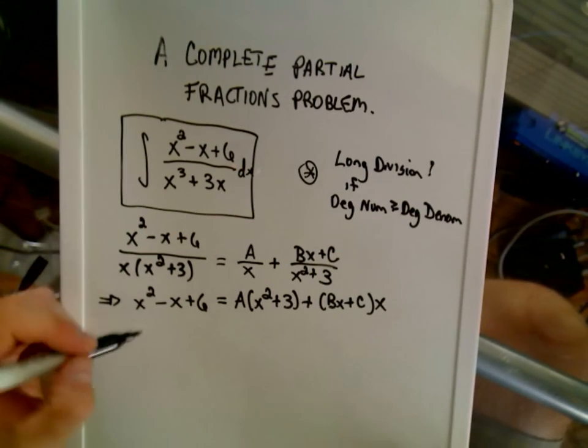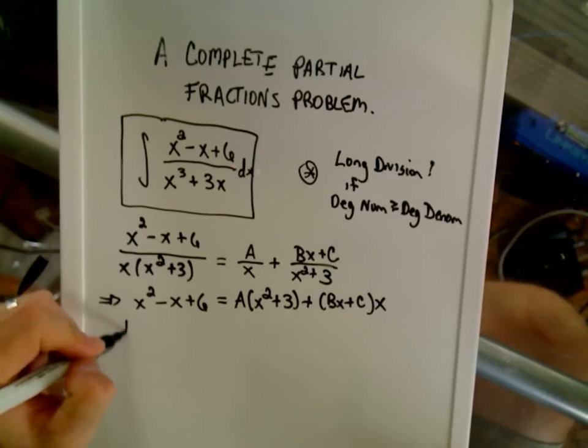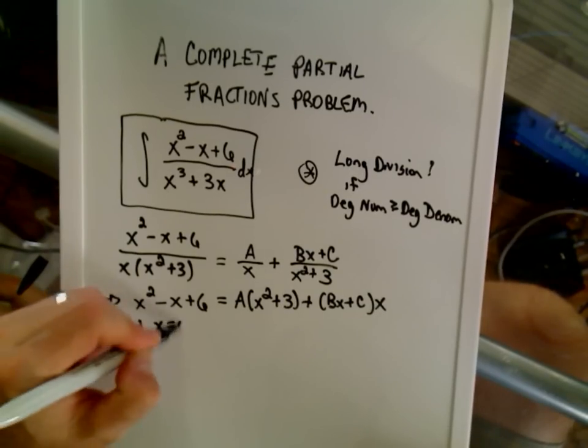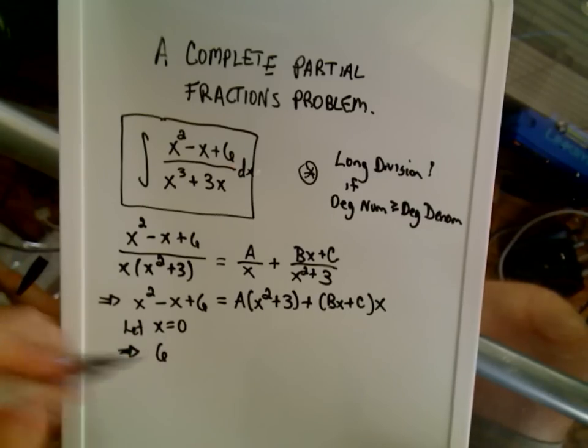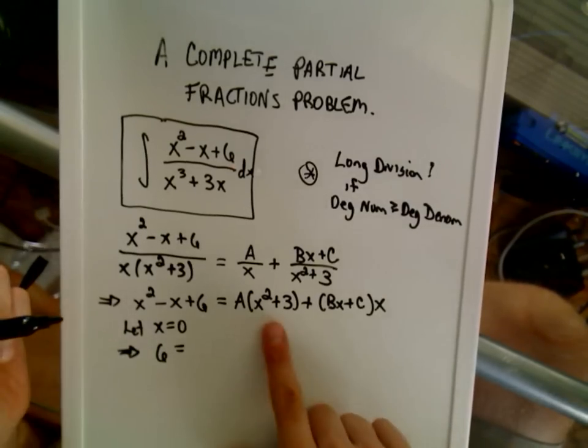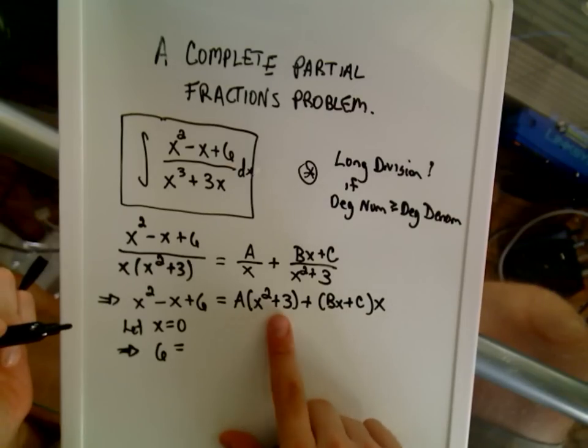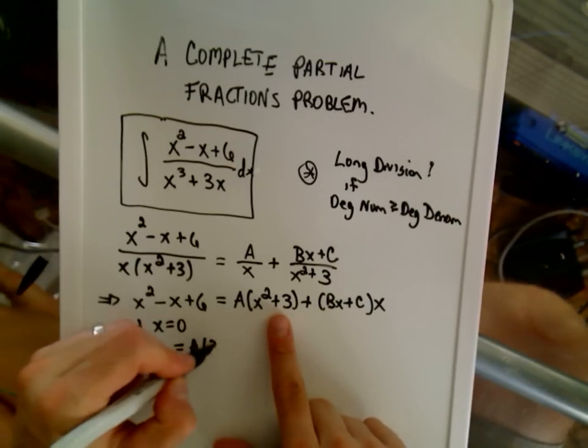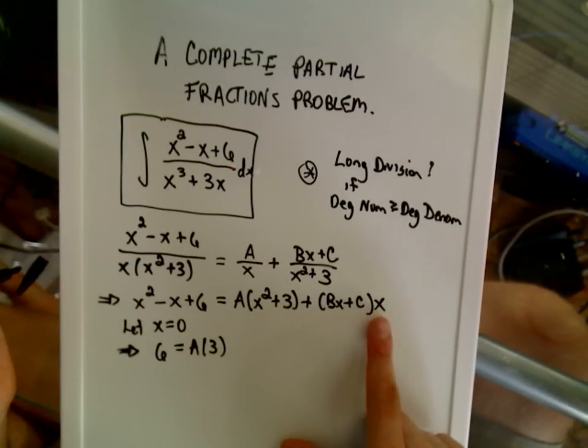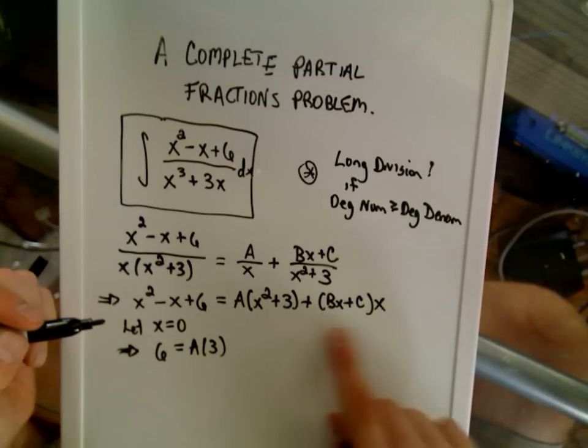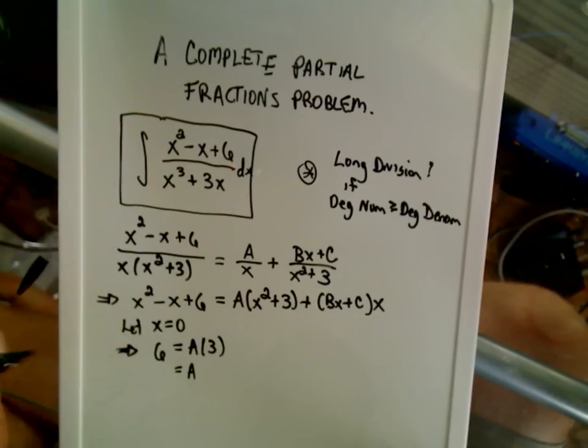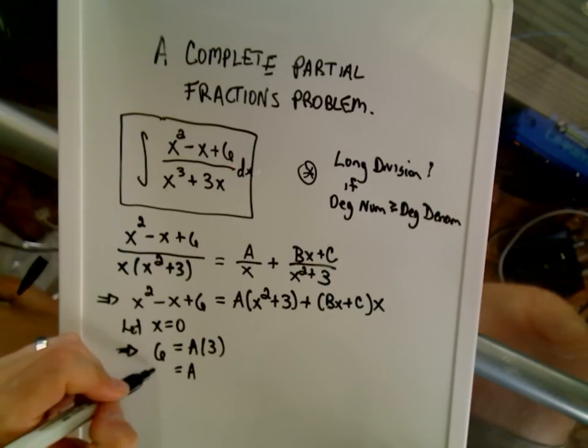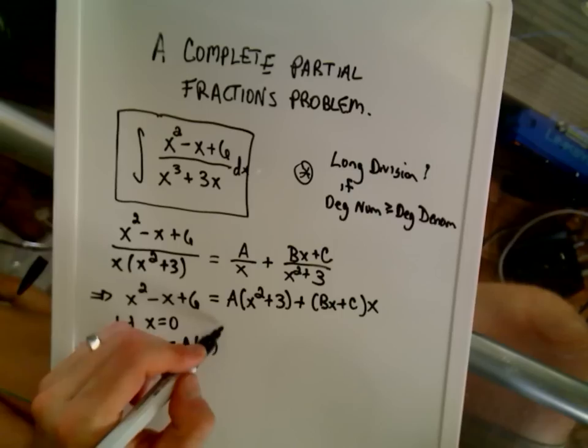At this step, what I would do is I would plug in x equals 0. Notice if you plug in x equals 0, on the left-hand side, you'll just be left with 6. On the right-hand side, if I plug 0 in, I'll get A times 3. But then if I plug 0 into the other part, I'll get a 0. So the whole second term will just cancel out, and that will allow me to solve for A, and I'll get 6 divided by 3, or I'll get A equals 2.